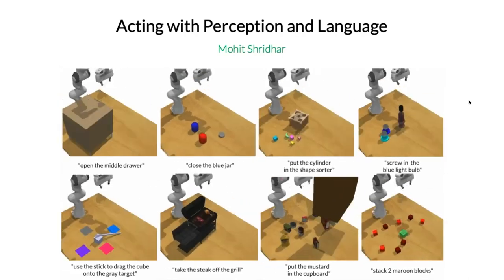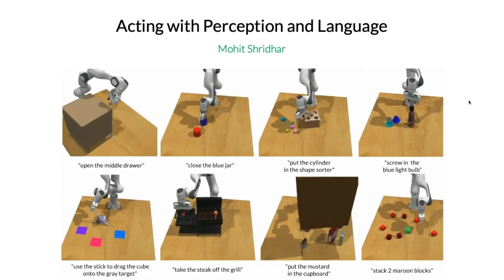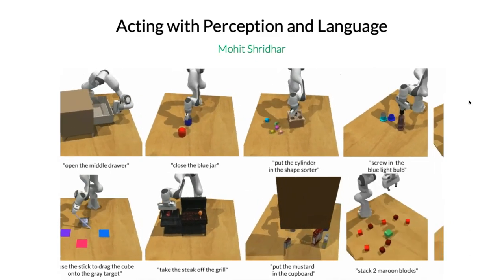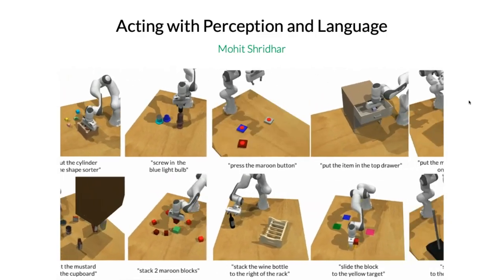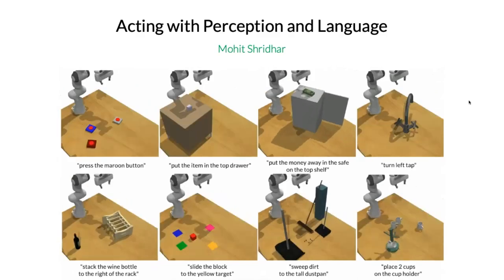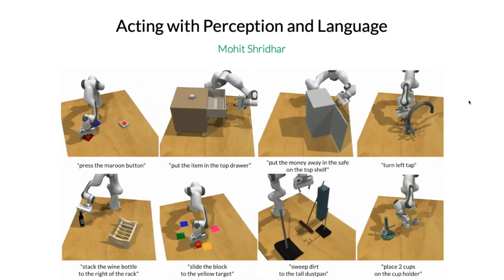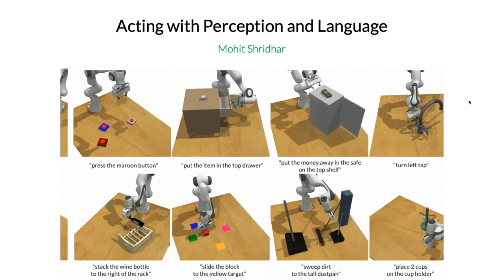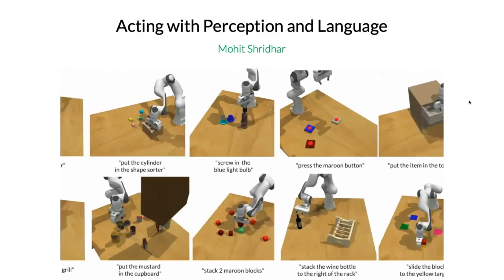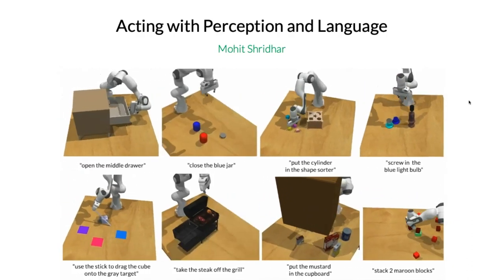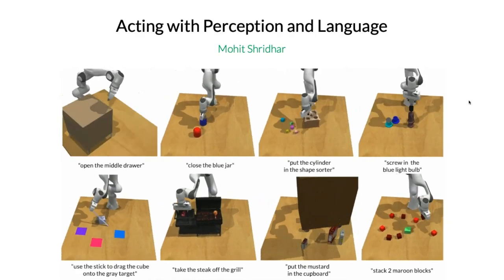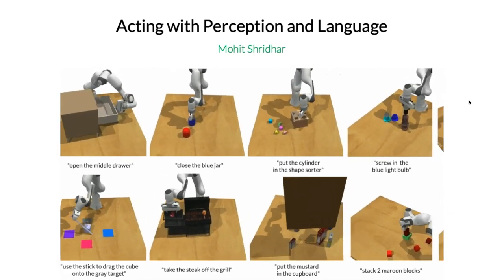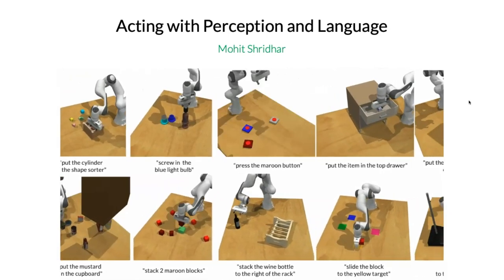Welcome to DPROP. Today is guest lecture two, and we have Mohit Sridhar, who is a PhD student from University of Washington, Seattle. He works with Professor Dieter Fox, and before that he worked with David Hsu, a faculty at National University of Singapore. Mohit is interested in AI, robotics, and the intersection of human-robot interaction, computer vision, and NLP. He's done amazing work in perception, grasping, and robot manipulation. It's my great pleasure to have him here.